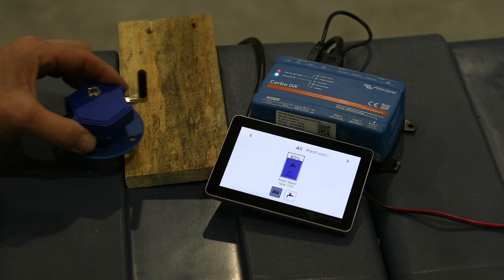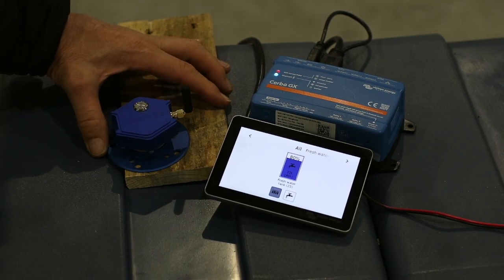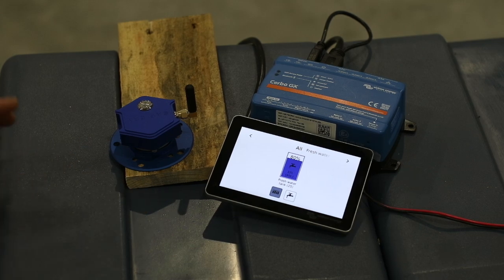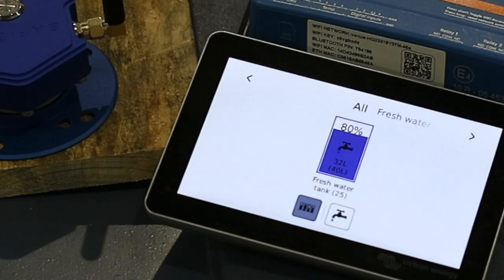To simulate a fiberglass tank, I'm going to put this piece of timber in here and put the sensor on top of the timber. There's a bit of an air gap in there. It's at a slight angle, so this is a worst-case scenario.